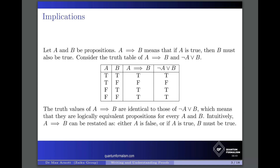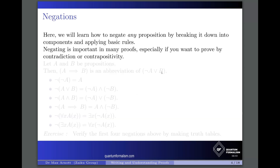This might be abstract and hard to grasp intuitively, so: A implies B can be restated as — either A is false, or if A is true then B must also be true. This makes sense. Now we're going to learn how to methodically negate statements. Any proposition can be broken down into smaller components, and we apply basic rules to negate any proposition. Negating is important in many proofs — techniques such as contradiction or contrapositive require negations, so it's important to know how to negate statements properly.